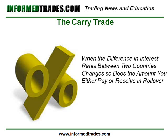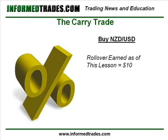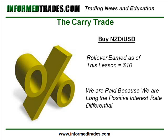As a quick example, let's take another look at the New Zealand dollar-US dollar currency pair. As of this lesson, if we were to buy the pair, then we would earn $10 for each contract held past 5 p.m. New York time. The reason why we would earn $10 is because we are long the New Zealand dollar where currently interest rates are at 8.25% and short the U.S. dollar where interest rates are currently 2%. So we are long the positive interest rate differential, which equals 6.25% — that is the 8.25% New Zealand rate minus the 2% United States rate.